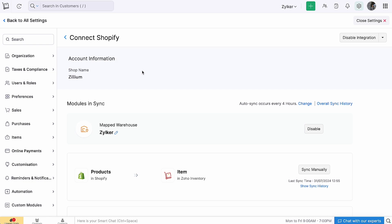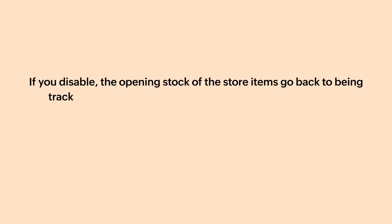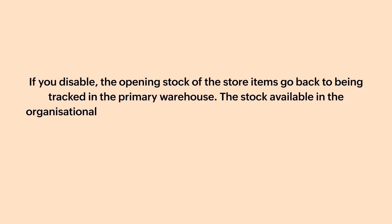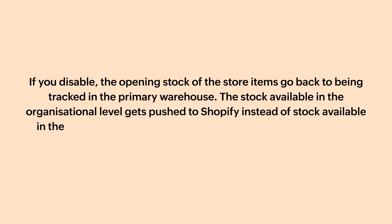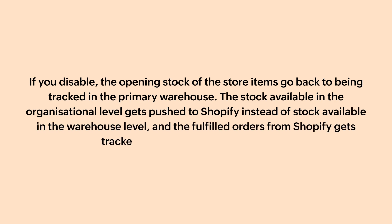You can click the Edit icon and change your warehouse preference. You can also choose to disable it. Note that if you disable, the opening stock of the stored items goes back to being tracked in the primary warehouse, the stocks available at the organization level get pushed to Shopify instead of stock available at the warehouse level, and the fulfilled orders from Shopify get tracked under the primary warehouse.